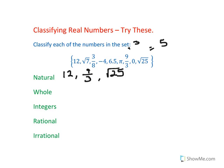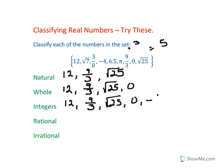And whole numbers are natural numbers plus 0. So we have 12, 9 over 3, square root of 25, and 0. So integers are whole numbers plus their opposites. So let's write down all the whole numbers again and negative 4.